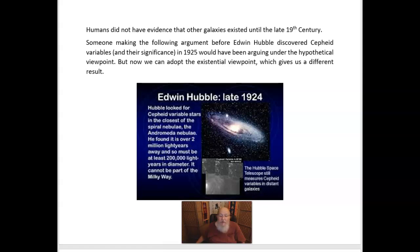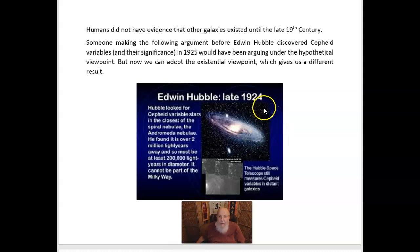Consider an example of how a universal statement went from being invalid under the hypothetical viewpoint to being valid under the existential viewpoint. Before the late 19th century, humans did not have evidence that other galaxies existed — people thought the entire universe was our Milky Way galaxy, except for Immanuel Kant, the great philosopher who thought there might be other galaxies but had no way to prove it. Someone making the argument we're about to consider, before Edwin Hubble discovered Cepheid variables and their significance in 1925, would have been arguing under the hypothetical viewpoint and would have had no way to take the existential one. But now we can adopt the existential viewpoint, which gives us a different result, since 1924.